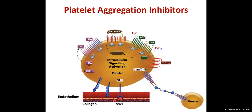Now we have drugs. COX-1 enzyme — cyclooxygenase — produces thromboxane A2. There is another enzyme known as thromboxane synthase that is present only in platelets, not in other cells — that is why thromboxane A2 is formed only in platelets. Aspirin blocks the formation of thromboxane A2 because it blocks COX-1 enzyme.